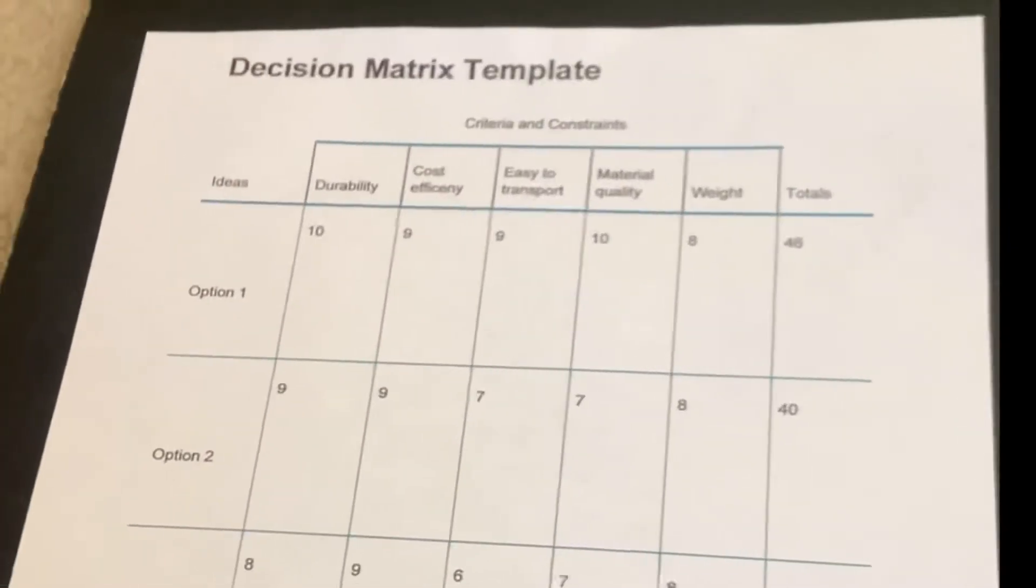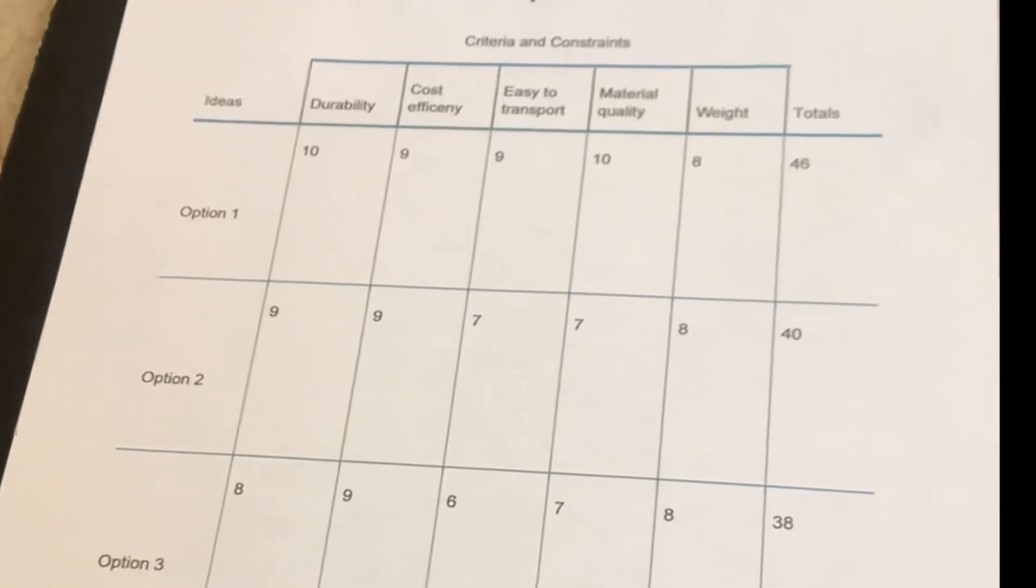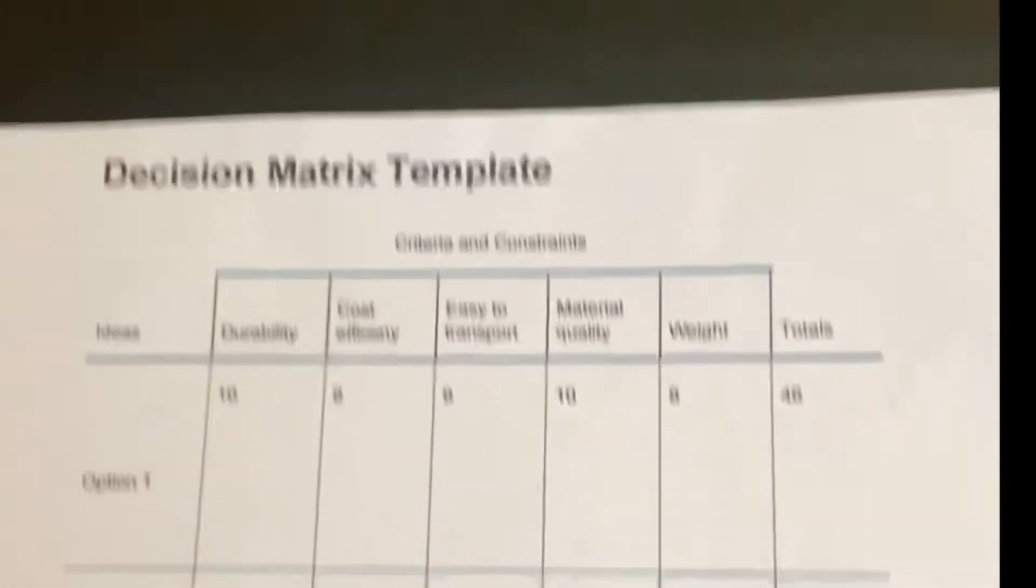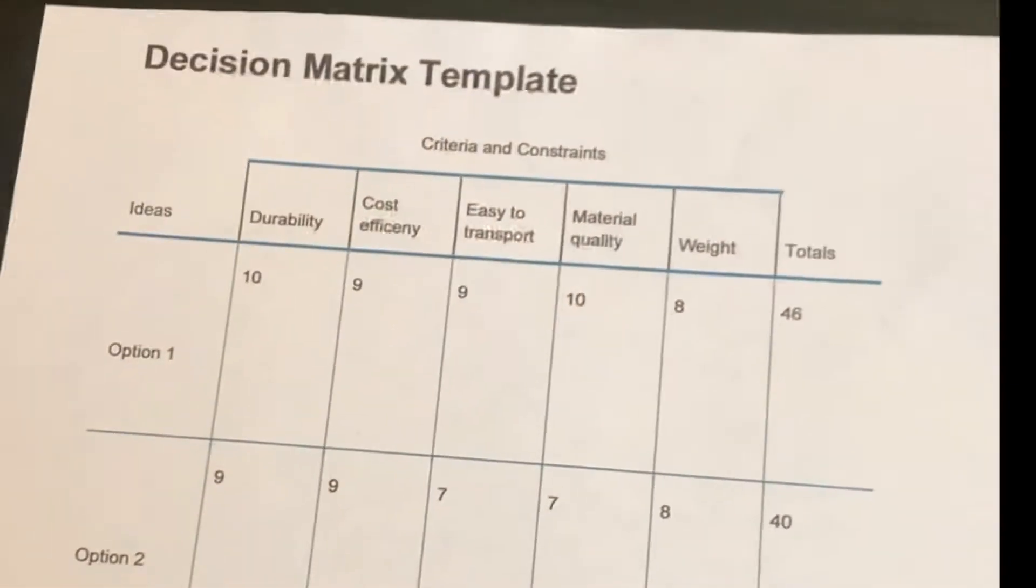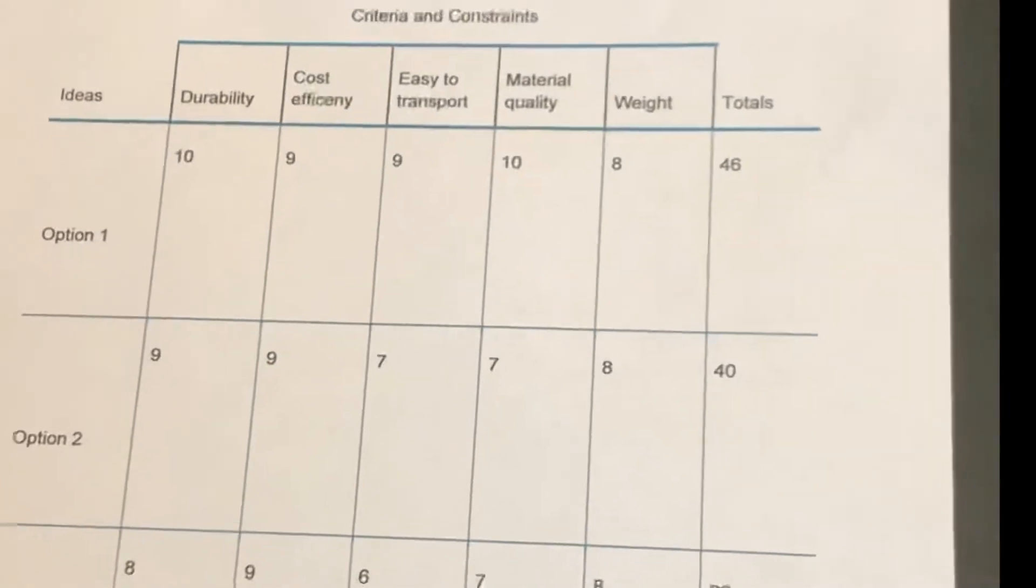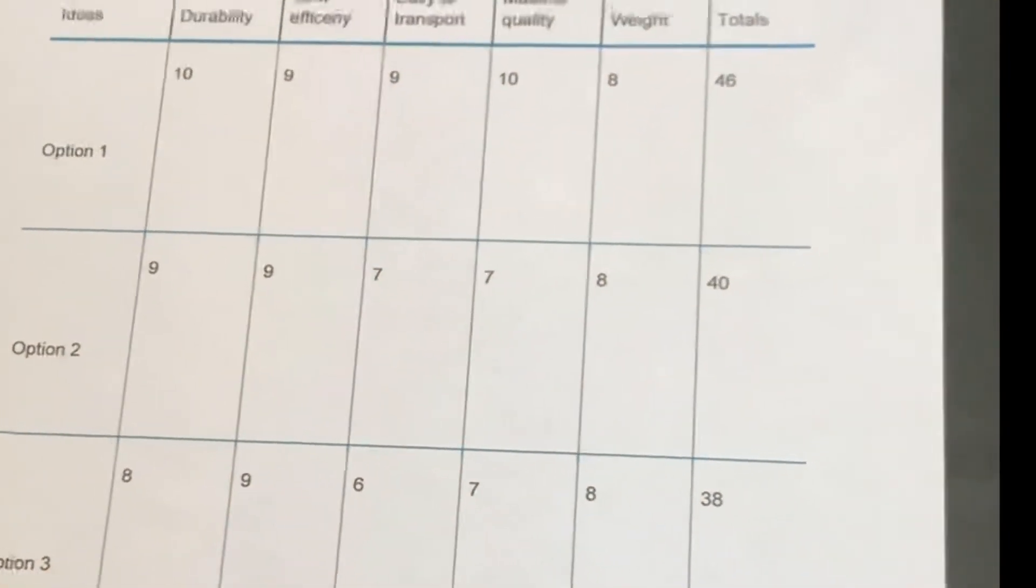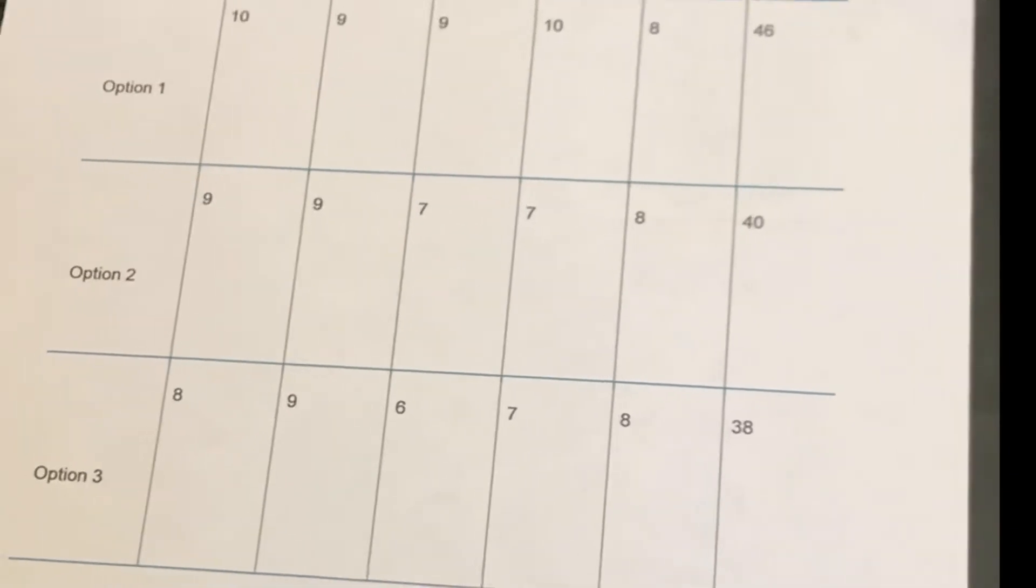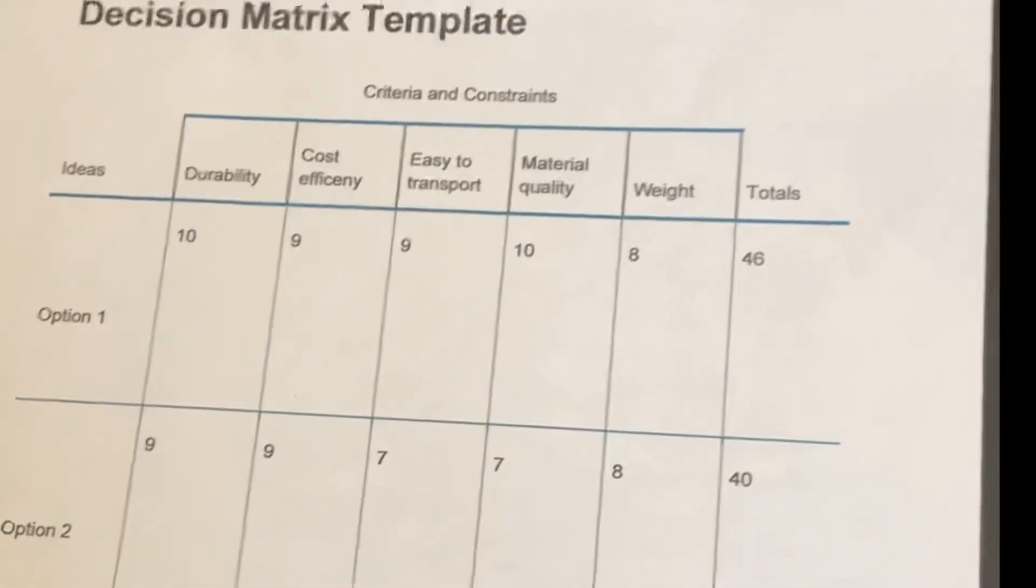We decided that to make a super secure case, we needed a strong durability. So the pole protector, it had a 10 versus the other two options not being as durable with a 9 and an 8. The cost efficiency, they were all about the same cost, a 9. They're all pretty cheap to make. They didn't take a ton of money to make these, but they're still efficient.